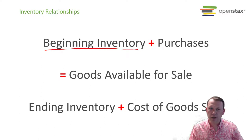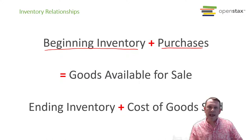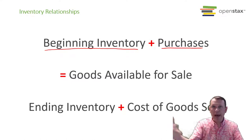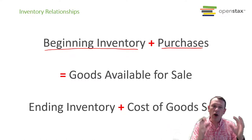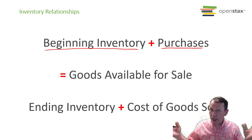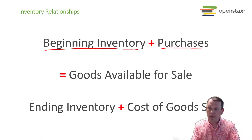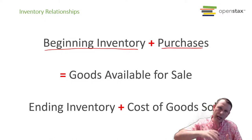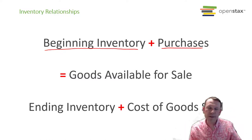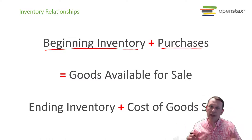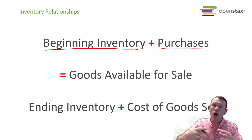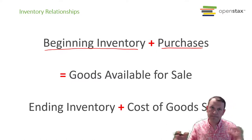Throughout the month, we're going to purchase inventory. Together, the beginning inventory — what we had on hand — and what we buy to put in our inventory are all the goods available for sale. This could be at the beginning of the month, or these purchases could happen throughout the year — we could have a purchase and a sale and a purchase and a sale. The main concept is: our beginning inventory plus all the purchases we make are all the goods available for sale in total.